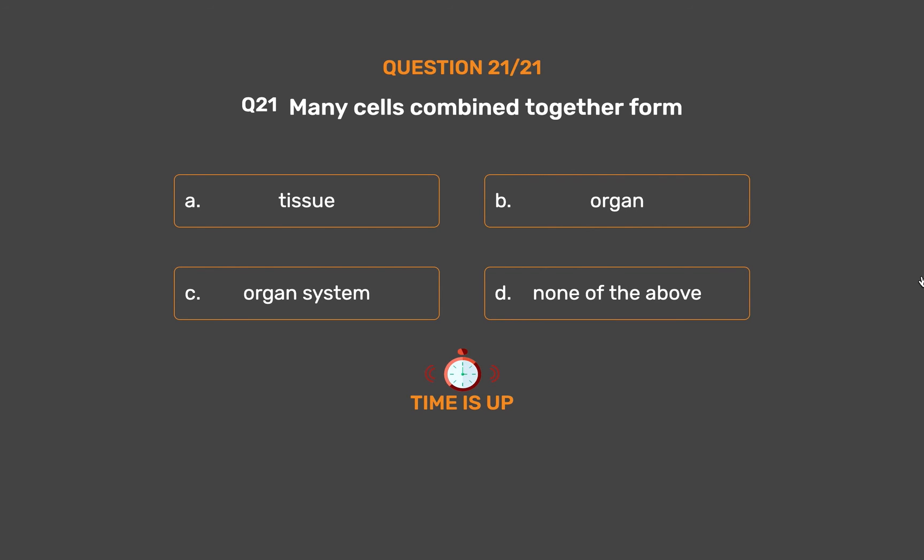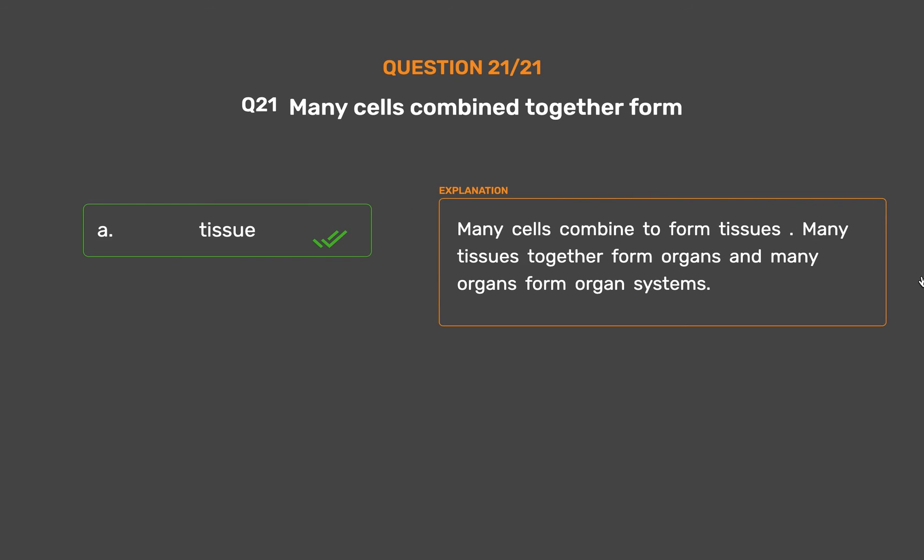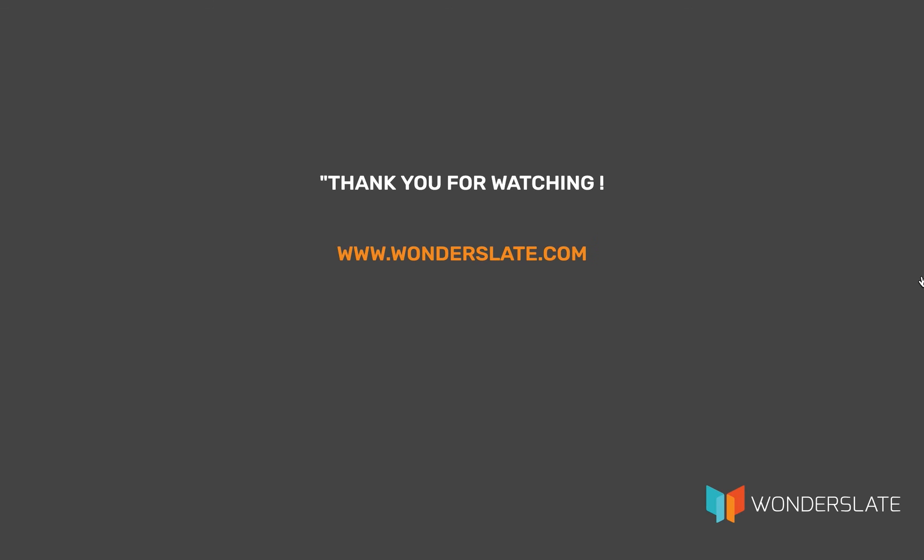The correct answer is Option A: Tissue. Many cells combine to form tissues. Many tissues together form organs, and many organs form organ systems.